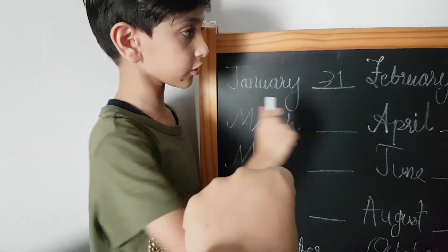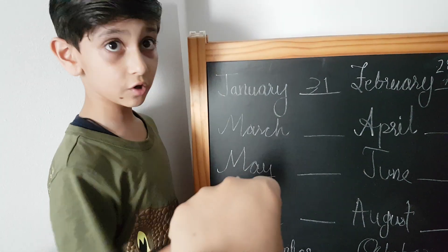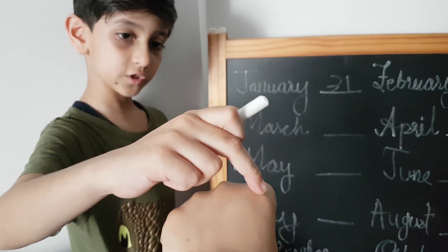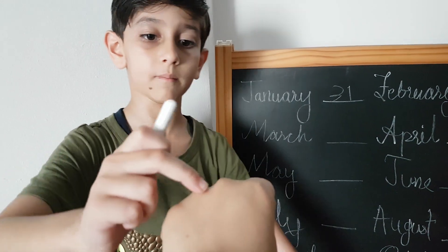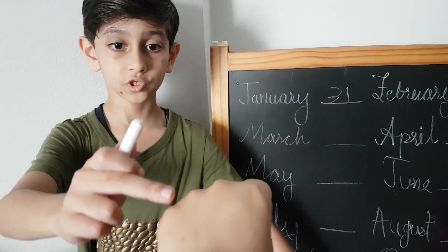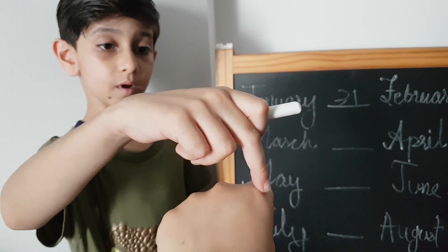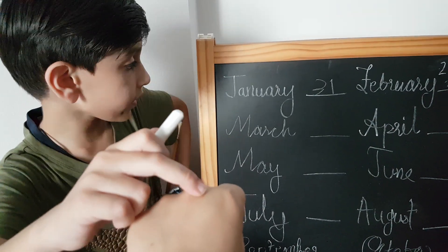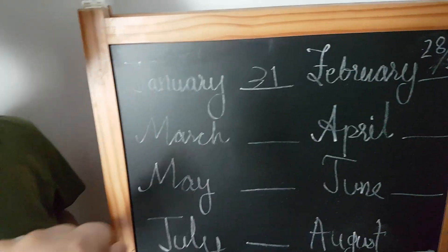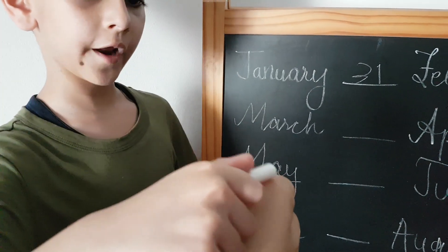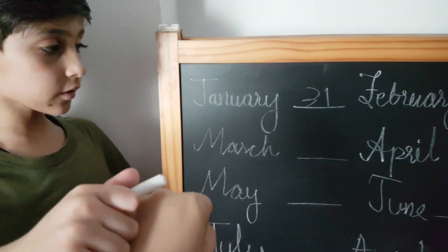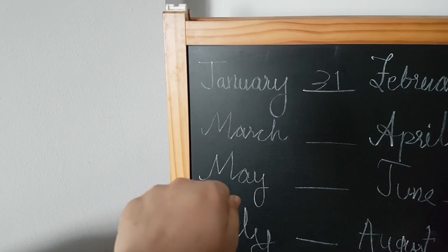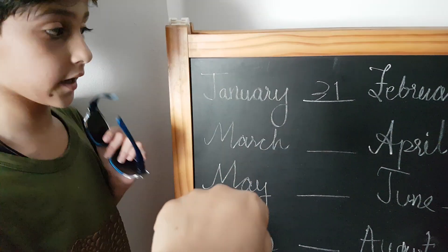Down here is February, and we already told you to remember that one. Now for March: January, February, March — March comes on the bump, so March will have 31 days. Now let's see April. April comes down because March is here on the bump, so April has 30 days.